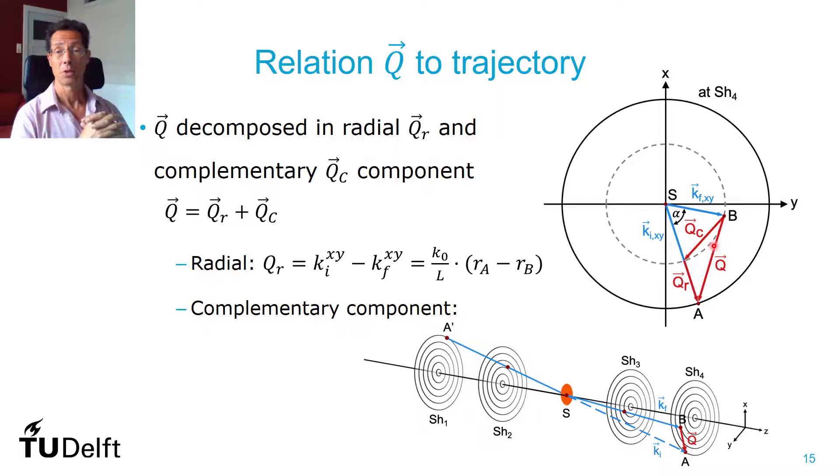And now, you can imagine that since precession only depends on the radius which goes through the shifter, only this radial transfer, the red part here, is important for the amount of precession you will get. And the complementary part doesn't matter.